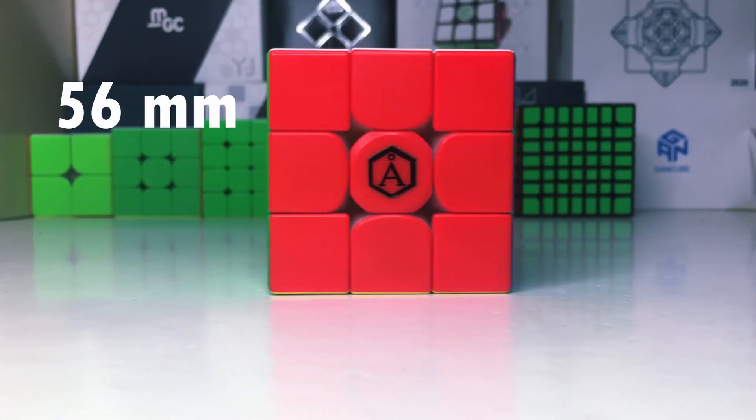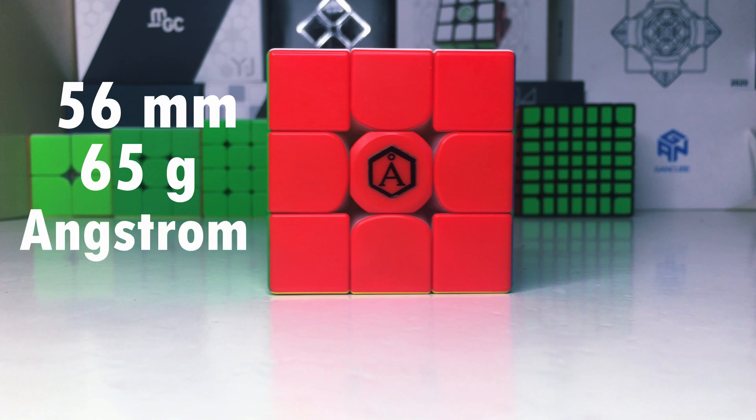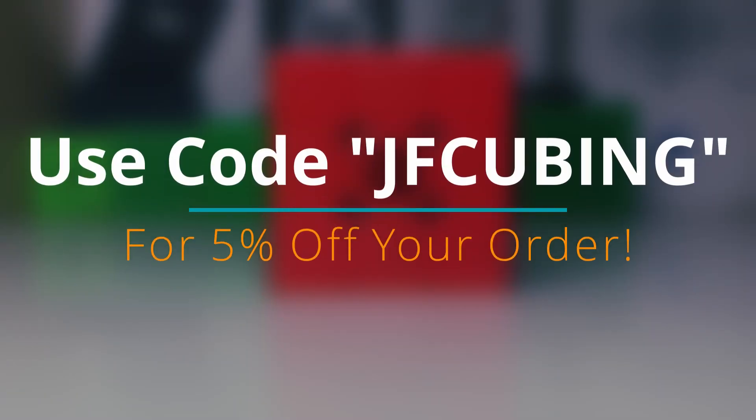Starting off with the basic specs, it's 56 millimeters, weighs a very light 65 grams, and features the Cubicle's very popular Angstrom service. You can pick up this cube for $74.99 at TheCubicle.com, and even less if you're using the discount code JFCUBING for 5% off your order.